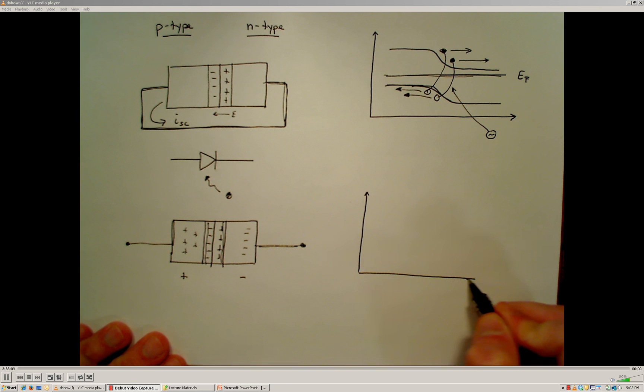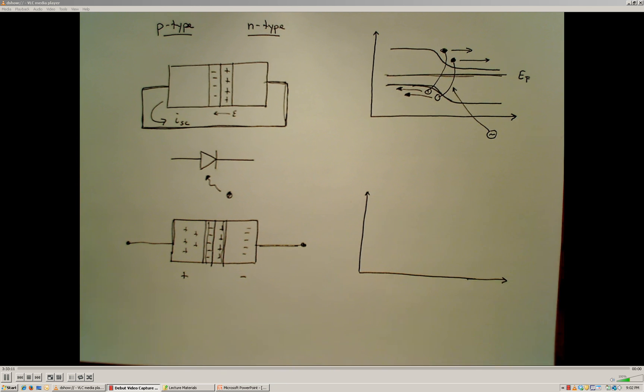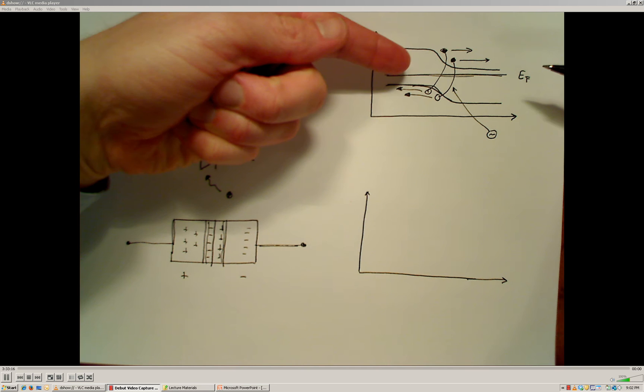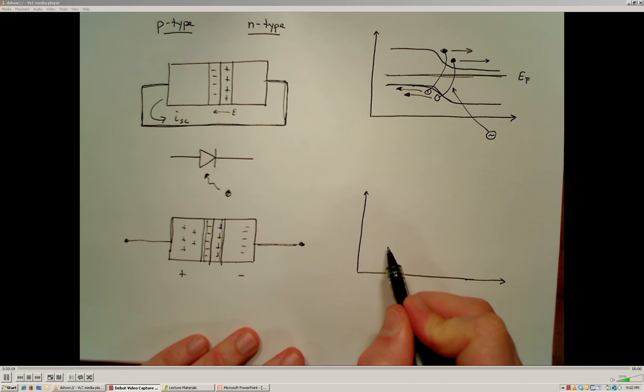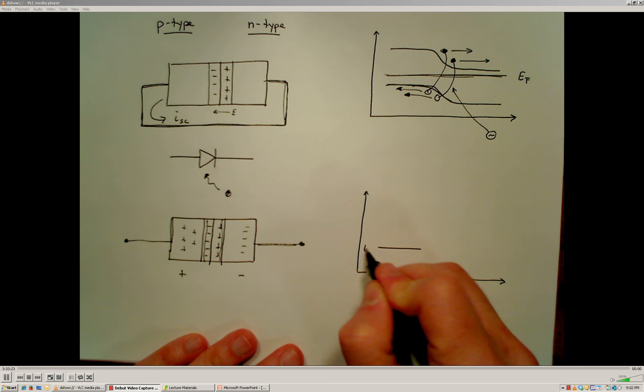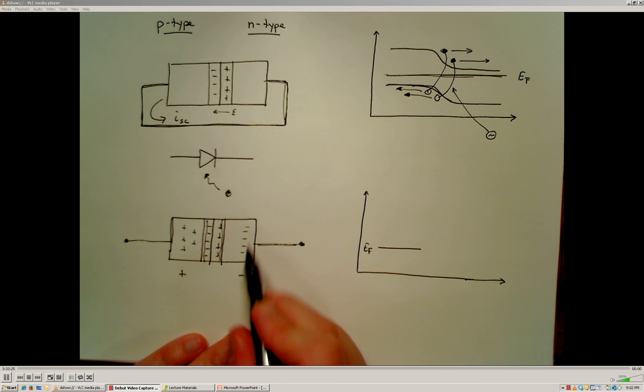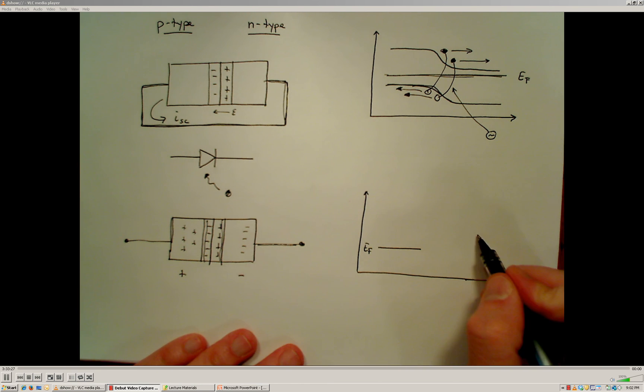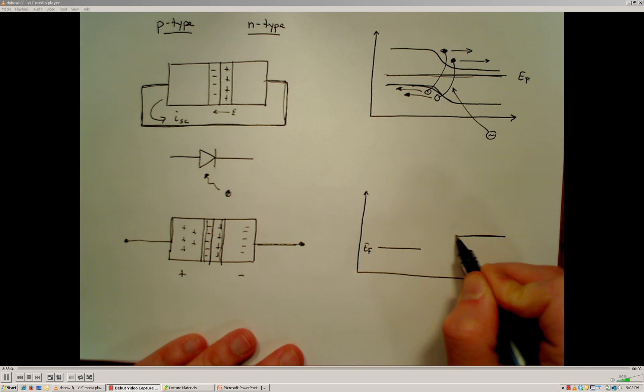If you'll recall from our previous discussions, too, that when we accumulate a positive charge on one side, that's going to be akin to taking the Fermi energy level down, moving the Fermi energy level downward, and on the n-type side, since we're accumulating negative charge, we're going to move the Fermi energy level up because we're increasing the electron energy in that region.